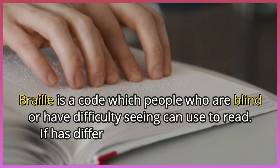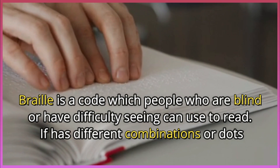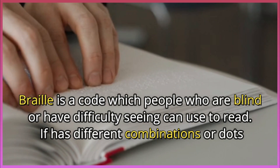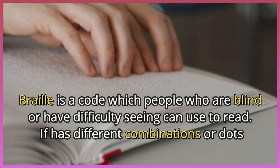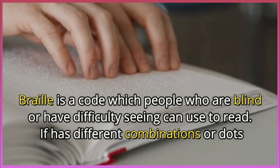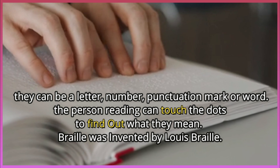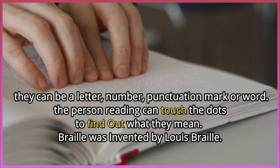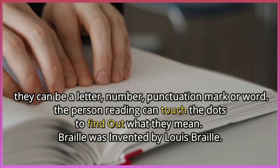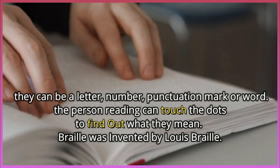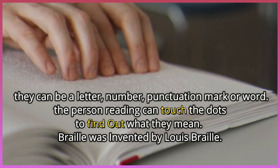Braille is a code which people who are blind or have difficulty seeing can use to read. It has different combinations of dots. They can be a letter, number, punctuation mark, or word. The person reading can touch the dots to find out what they mean. Braille was invented by Louis Braille.